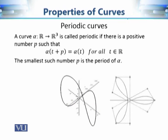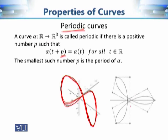Similarly, we can talk about periodic curves. As the name suggests, a periodic curve repeats itself after some period p. Starting from a point, the curve traces its path and then comes back and repeats the trajectory again after a particular value of the parameter, say p. If such a p exists, we say that alpha is a periodic curve.